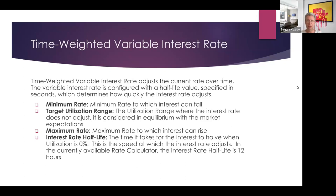The Time-Weighted Variable Interest Rate has a minimum rate, a maximum rate, and a target utilization range. If the utilization goes outside the target range, the rate increases or decreases every block. The 'interest rate half-life' for this calculation is 12 hours — meaning that's the speed at which the rate will be halved.